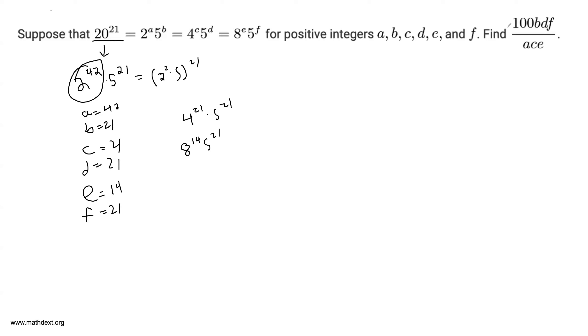So we want to find 100bdf over ace, which is 100 times 21 times 21 times 21 over 42 times 21 times 14. A lot of things cancel out. This 21 turns into a 3, this 14 turns into a 2, then both of these cancel out with this 100, which leaves 25.